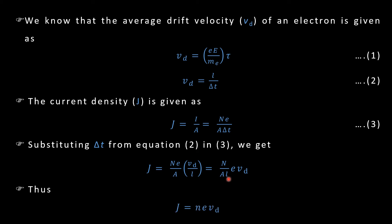So the relation becomes J is equal to neVd. So this is the required relation between J current density and drift velocity Vd. Now what does it say?